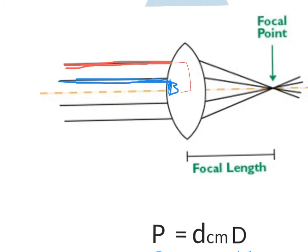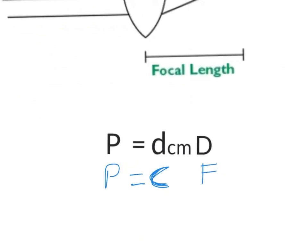d centimeters, small d. Big D or F represents the power of the lens. One diopter, two diopters, three diopters, etc.